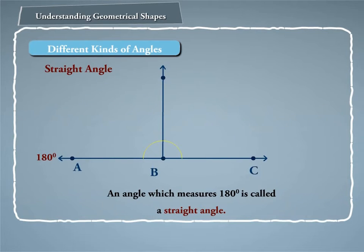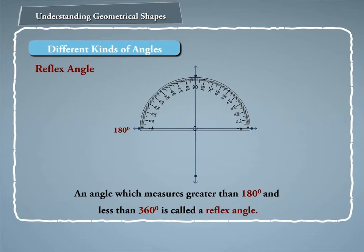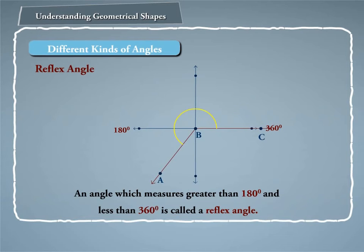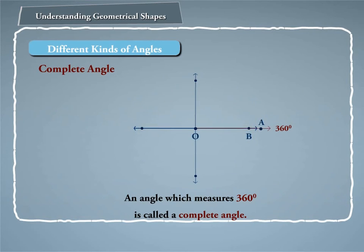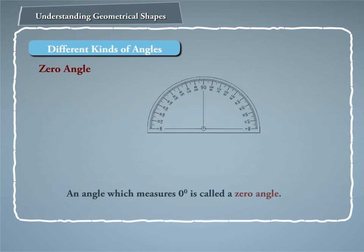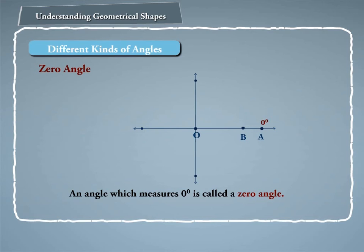An angle which measures 180° is called a straight angle. In the figure, angle ABC is a straight angle. An angle which measures greater than 180° and less than 360° is called a reflex angle. In the figure, angle ABC is a reflex angle. An angle which measures 360° is called a complete angle. In the figure, angle AOB is a complete angle. An angle which measures 0° is called a zero angle. In the figure, angle AOB is a zero angle.